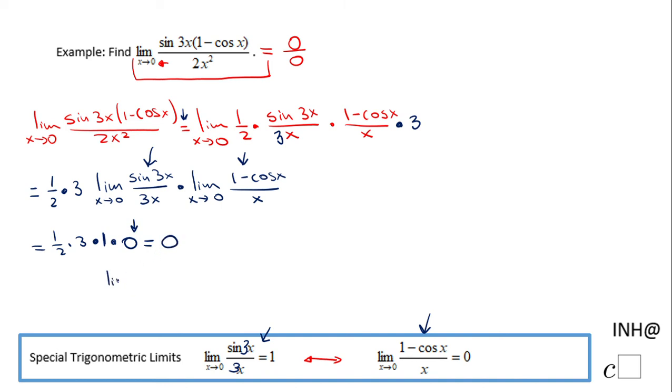So this limit, the limit when x approaches 0 of sine of 3x times the quantity 1 minus cosine x over 2x squared, is 0.